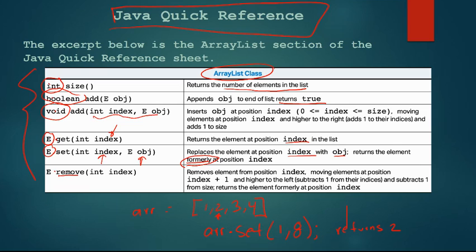And remove also returns what was formerly at that index but it will subtract 1 from all of the elements to the right of that index. So you refer back to this ArrayList class and the Java quick reference so that you can use it to help you answer questions on the exam.